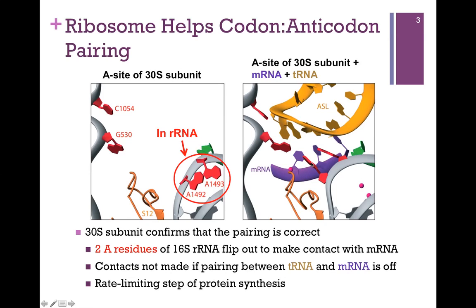If the base pairing is correct, those two A residues will move from their original position, essentially flip out, and make contact with two adjacent nucleotides within the codon of the mRNA. So if the base pairing is correct between the tRNA and the mRNA, then those two A residues can make appropriate contacts. If, however, that base pairing is incorrect, those two adenine residues cannot make those contacts, and that's how we determine whether or not that's the proper interaction between the anticodon of the tRNA and the codon of the mRNA.